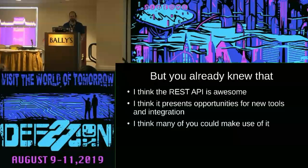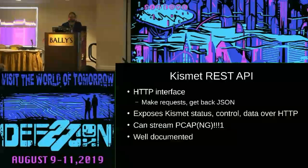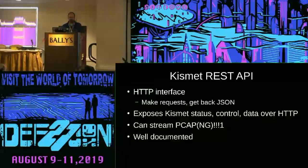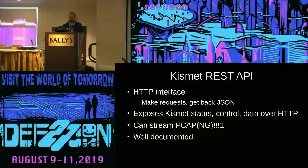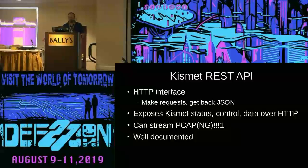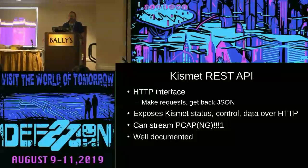I figured people here might be into it. It's an HTTP interface — you make requests to it, asking for system status or specific device status, and it gives you back lots of JSON which you can parse and do fun things with. My favorite feature is actually getting PCAP over HTTP. And for an open source project, it is extremely well documented. The guy that writes Kismet, Dragorn, obviously put a lot of time into documenting this REST API, which makes it a lot easier to use.